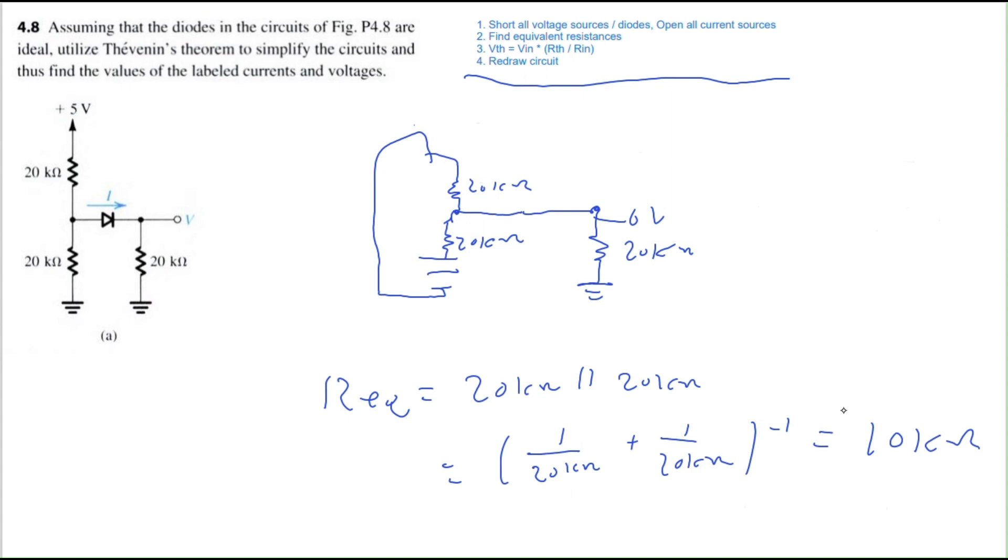Whenever both resistors are the same value, it's essentially just half. Now we can find V Thevenin. That's going to be equal to the original input voltage of 5 volts multiplied by R Thevenin, 10 kilo ohms, divided by the original input resistance. That's going to be the resistance that is immediately seen by the voltage source, so here it's 20 kilo ohms, this resistor right here. And so that gets us 2.5 volts.